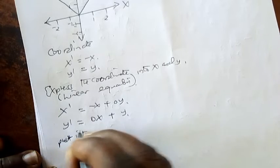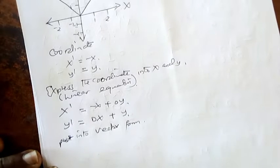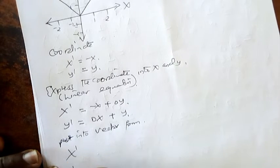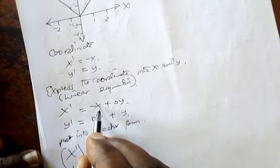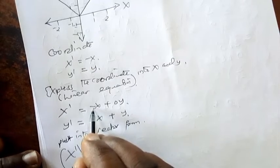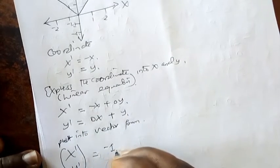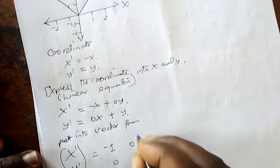Put it into vector form. When we write it into vector form, it will be like this. In vector form it will be (x', y') equals: we start here, the value of x is 1, of y is 1. So here it will be negative 1, here it will be negative 1, this will be 0, this here will be 0, this here will be 1.